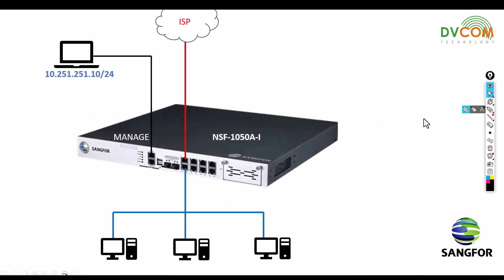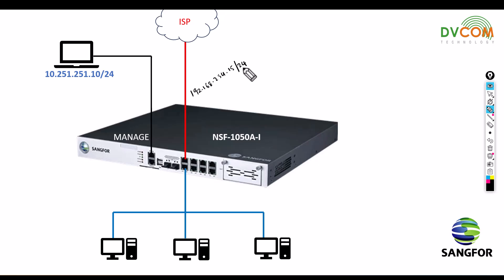In my lab I have an NSF1050 AI. In my previous video I showed you how to configure WAN and LAN zones. For my WAN I configured the IP address as 192.168.254.15 /24, and my LAN zone is configured as 192.168.100.1 /24.